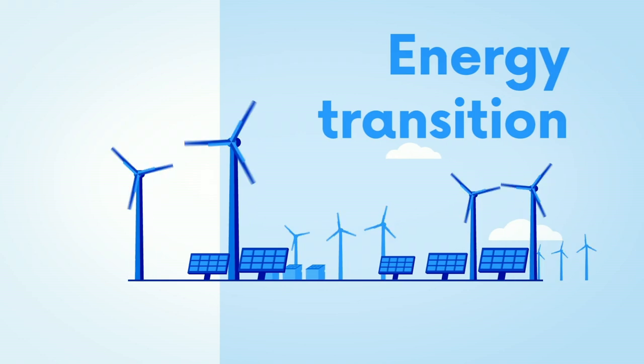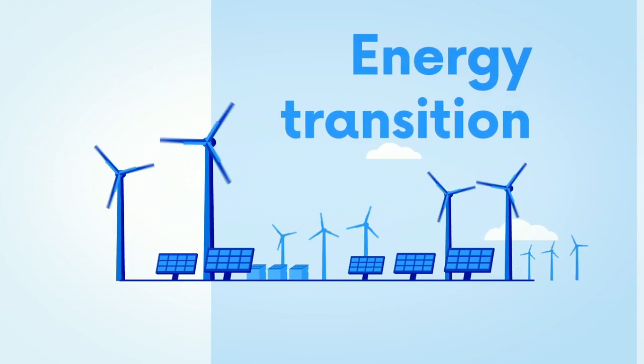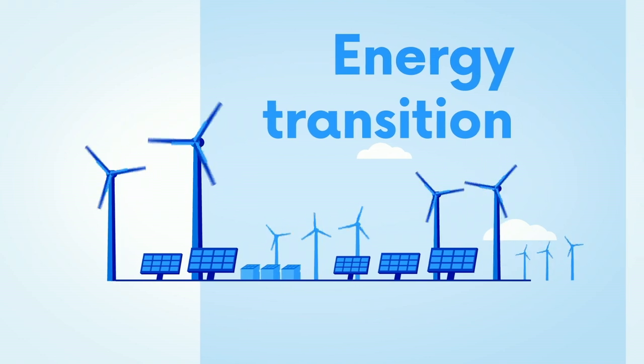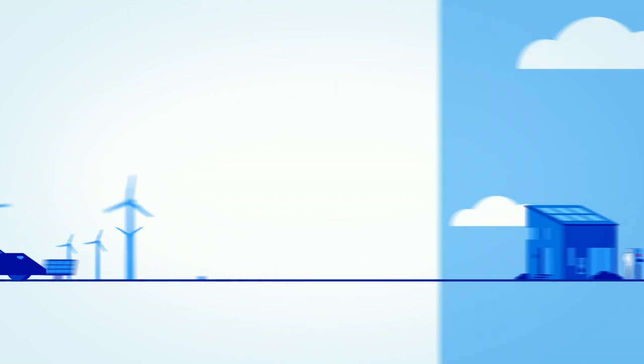The energy transition is causing the electricity system to become increasingly volatile. The energy supply is fundamentally changing due to the influx of unpredictable weather-dependent energy sources.